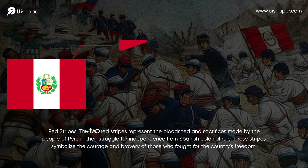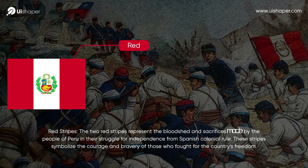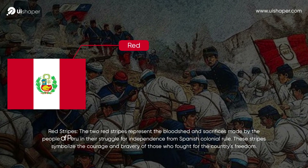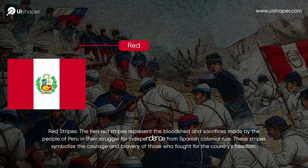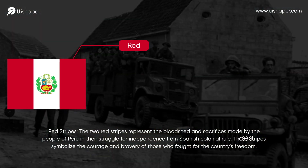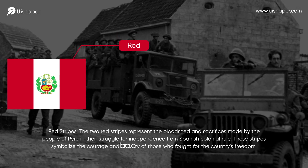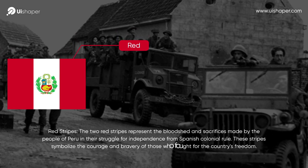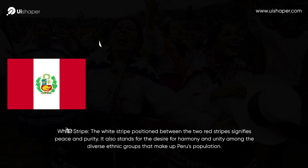Red stripes. The two red stripes represent the bloodshed and sacrifices made by the people of Peru in their struggle for independence from Spanish colonial rule. These stripes symbolize the courage and bravery of those who fought for the country's freedom.